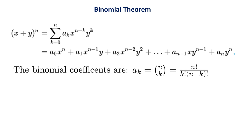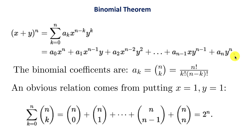Here is the formal statement of the binomial theorem: (x+y)^n can be expanded in a series with binomial coefficients a_0, a_1, a_2, ..., where a_k = (n choose k). You prove this theorem by induction — assume it's true for n, then show it's true for n+1. One useful relation comes from putting x = 1, y = 1: (1+1)^n = 2^n, so the sum of all binomial coefficients (n choose k) for k = 0 to n equals 2^n.